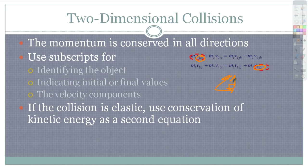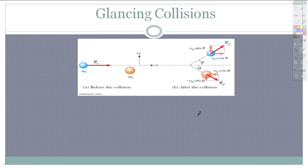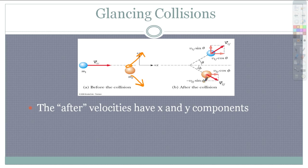If the collision is elastic, we can use conservation of energy as a second equation. A simpler equation can only be used for one-dimensional situations, not in two dimensions. In two-dimensional collisions, it's usually because something glances off — one ball is hit but the second ball is not right in its path, so it hits on the side. One guy gets bounced off that way and this guy bounces off the other way, giving us x and y components for each. We find those using angles — theta and phi — using cosine for x-components and sine for y-components.